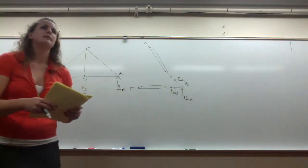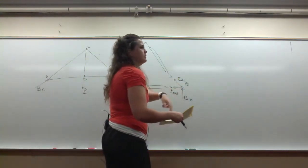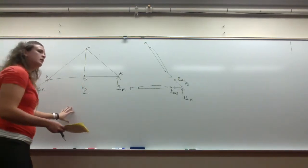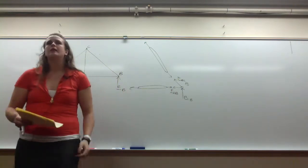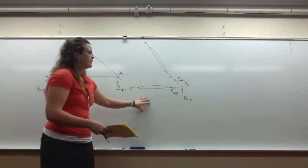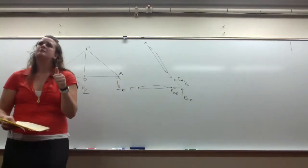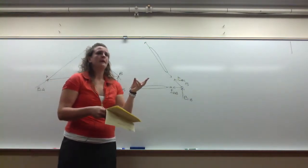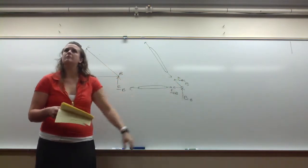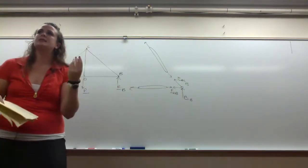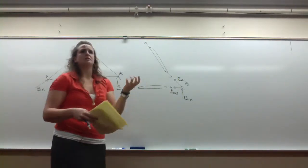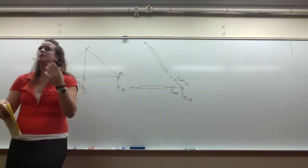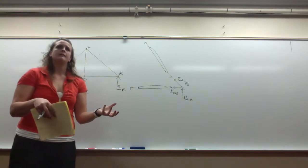With the method of joints, start with a joint where you know the reaction force. When you start with a joint, you need to have at most two unknowns, because with the method of joints we only have two equations of equilibrium — we can't sum the moments about a joint. Our equilibrium equations are only the sum of the forces. We use sum of moments as a whole to solve for the reaction forces. It might make more sense when we work an example.